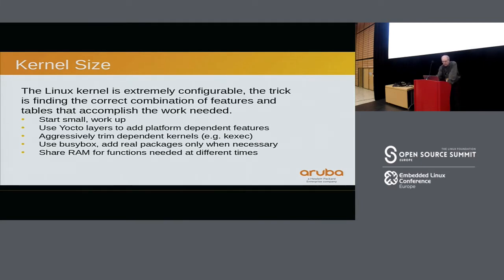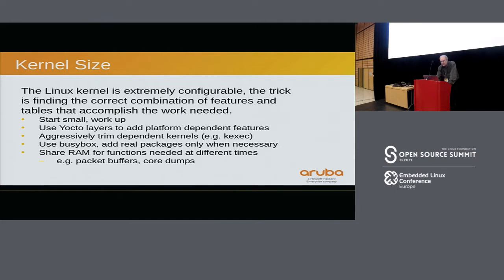If you've got a small RAM footprint and a smaller network switch, you can share RAM for functions that are needed at different times. For instance, if your redundant management detects a problem and needs to reboot, you want to fail over functionality to another CPU or another switch, and then use that time to gather logs and core dumps. You no longer need network buffers, and you can use that space differently.